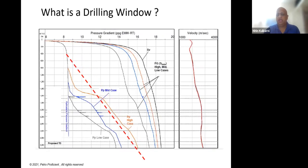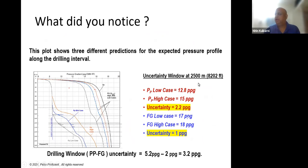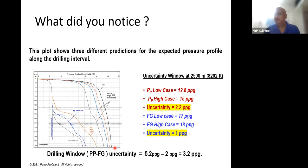When talking about uncertainty — at a particular depth, say 2500 meters on this plot, you have three values of pore pressure. Your low value is 12 PPG, your high value is 14.2 PPG — generated using geomechanical studies. This is what you have in a new exploratory or appraisal well. There is an uncertainty of 2.2 PPG. In fracture gradient at the same depth, the low case is 17 PPG and the high case gives an uncertainty of 1 PPG, making total uncertainty 3.2 PPG.